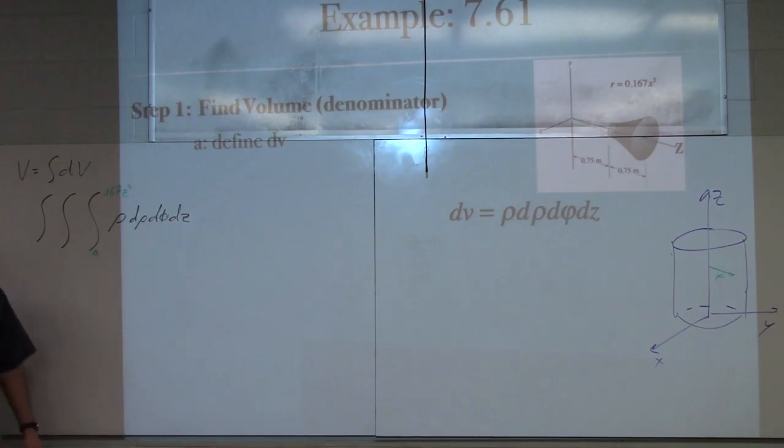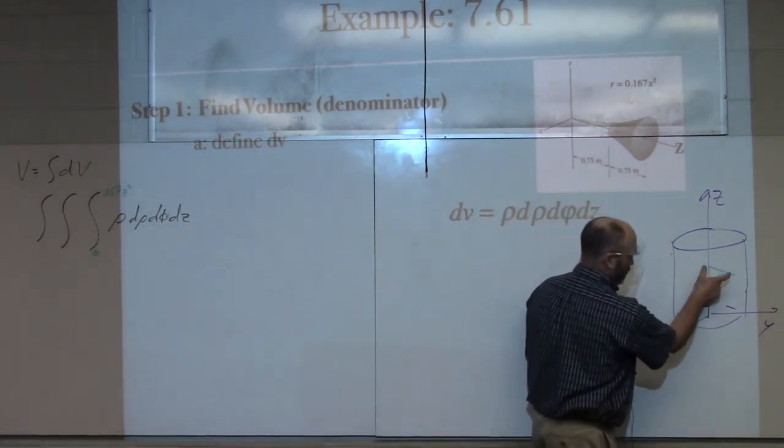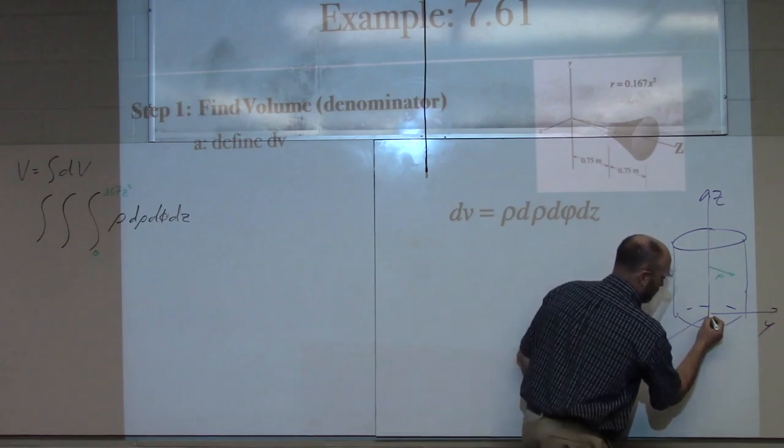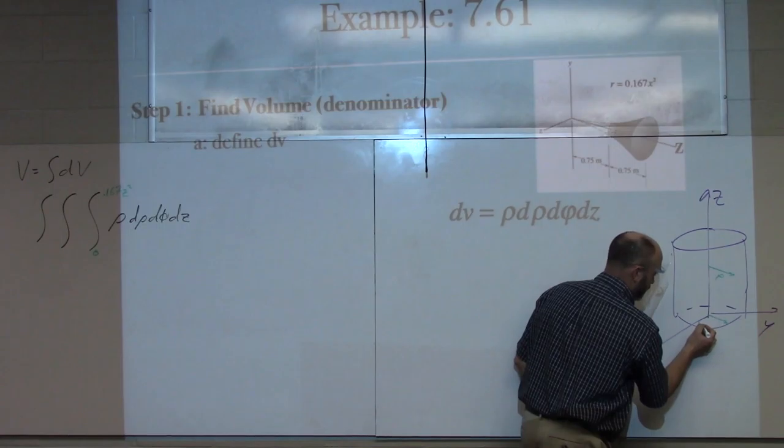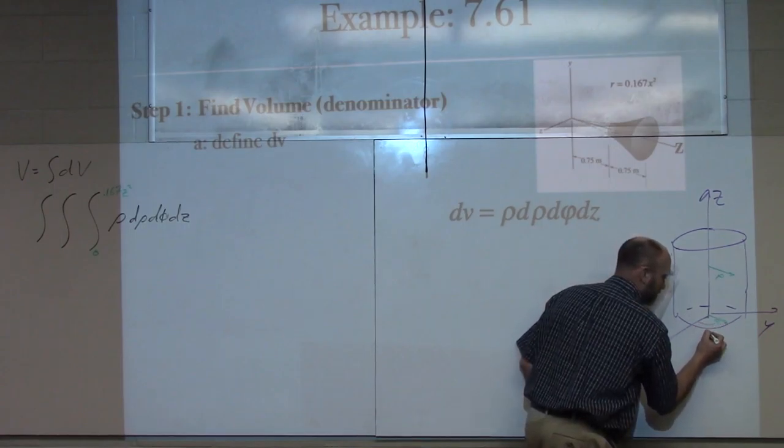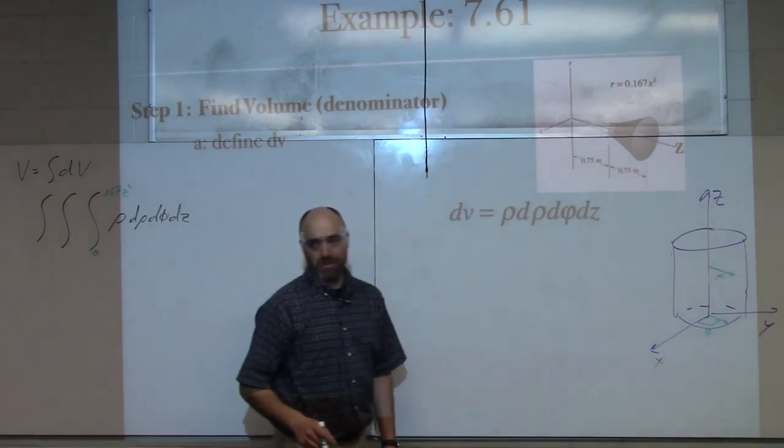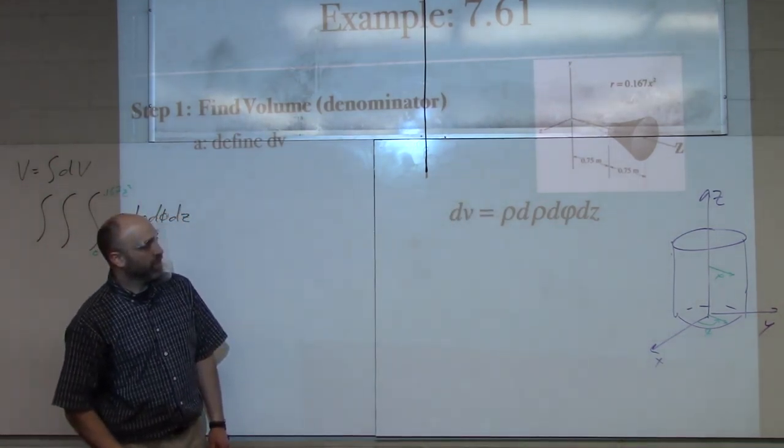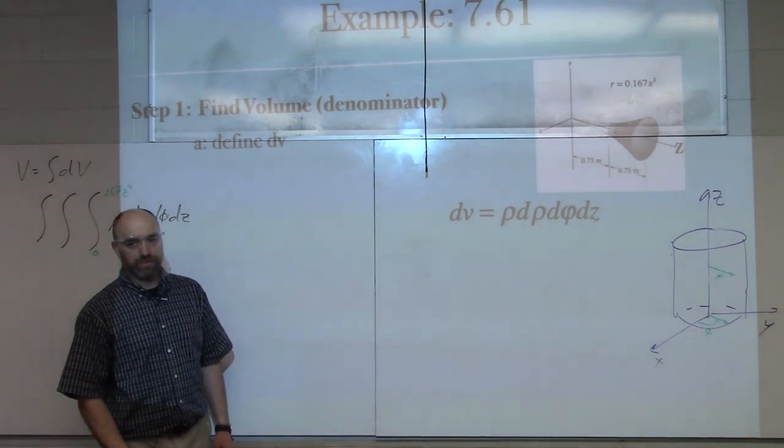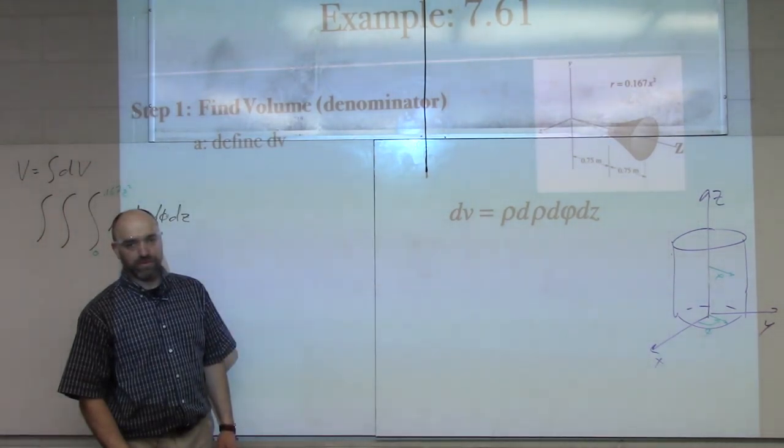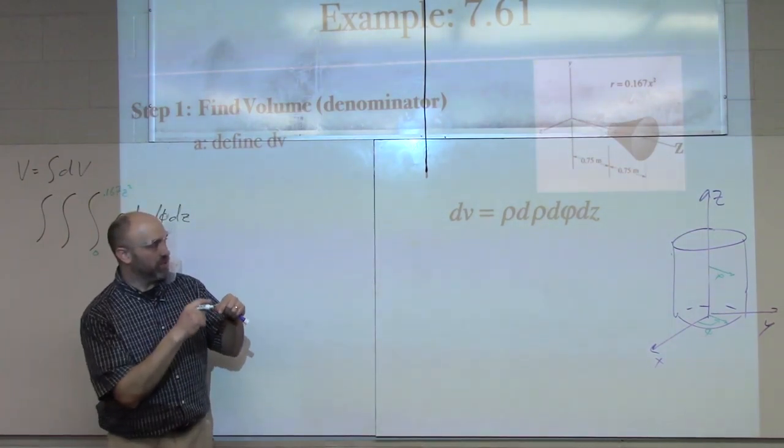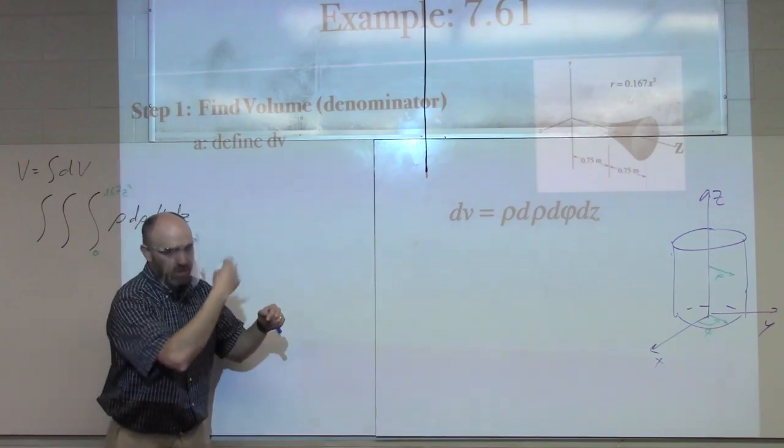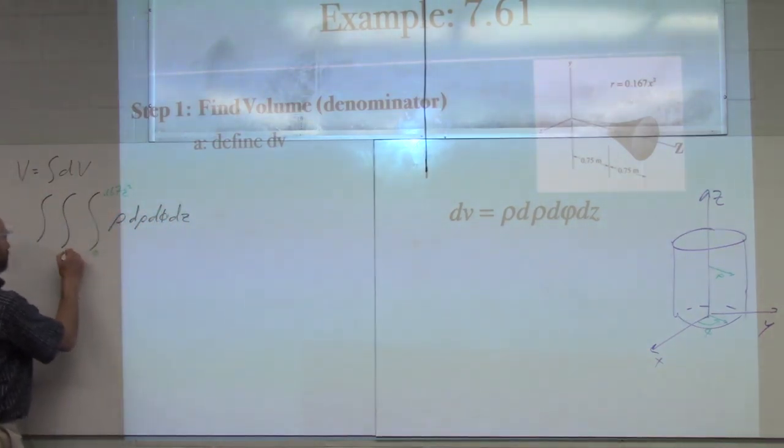What about phi? Where's that gonna go from and to? Now, remember, on your coordinate system here, if you drop this thing down here to the xy-plane, put this on here like this, then phi measures from the x-axis over to that rho. So, where do I want it to go? I want, it's a complete circle, right? It's not a piece of a circle, it's the whole thing. So, I'm gonna draw that line, and then I'm gonna rotate it around. Okay? So, it's gonna go all the way around.